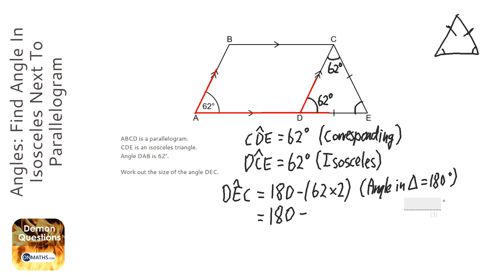OK, so that's going to be 62 times 2, well 60 times 2 is 120, so it'll be 124. And then when you take that away from 180, you're going to get 56. OK, so the angle's going to be 56 degrees.